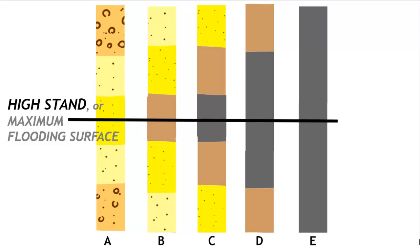And that divides the cores essentially into two kind of mirror images top to bottom. And so the lower half of each of those cores is evidence of a transgression and the upper half is evidence of a regression.